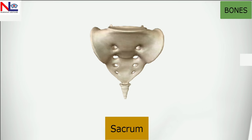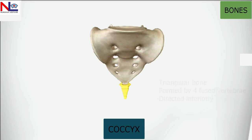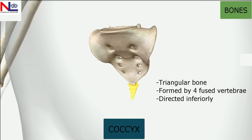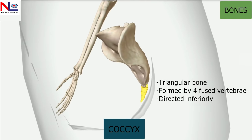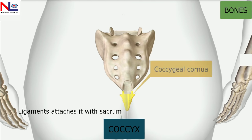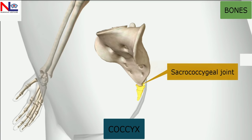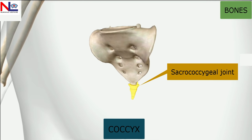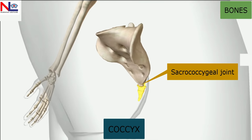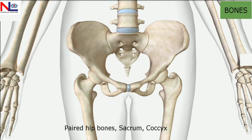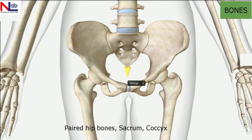At the inferior end of the sacrum is the coccyx — a triangular-shaped bone formed by four fused vertebrae. In females, it is directed inferiorly. At the posterior superior aspect are the coccygeal cornua, serving as attachment points for ligaments connecting with the sacrum. In females, the sacrococcygeal joint is more flexible, so at the time of delivery the baby can easily pass through. The bones of the maternal pelvis are the paired hip bones (ileum, ischium, and pubic bone), one sacrum, and one coccyx.